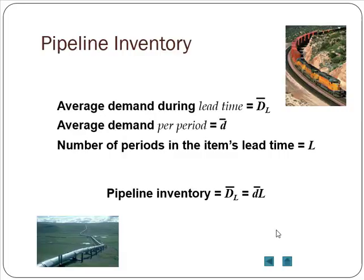For pipeline inventory, we calculate it as a multiplication of the average demand per period, the D bar (bar on top of D). This is the average demand per period. L is the number of periods in the item's lead time. Lead time refers to the time interval between when we place the order and when we actually receive the order.